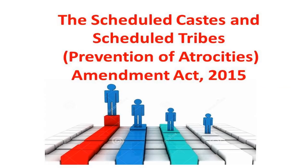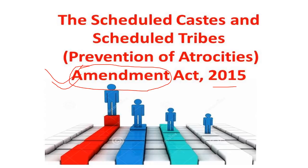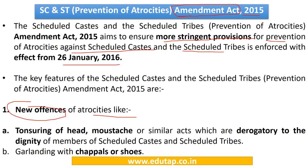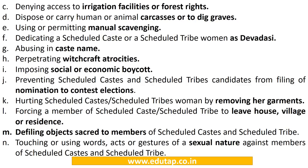The Scheduled Caste and Scheduled Tribes Prevention of Atrocities Act 1989 was amended in 2015 and came into effect from 26 January 2016. The amended Act, known as the SC/ST Prevention of Atrocities Amendment Act 2015, aims to ensure more stringent provisions for prevention of atrocities. Apart from the actions already listed as offences, new offences were added in 2015 to broaden its scope — remember all the new offences of atrocities which were added in 2015, as questions in this regard can come in the exam.